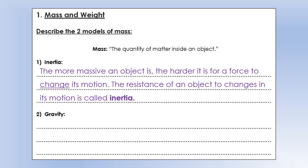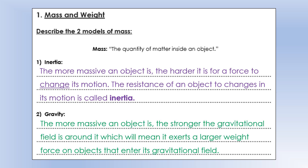The other aspect of physics that mass affects is gravity, because things with mass have gravitational fields around them which interact with each other. The more massive an object is, the stronger the gravitational field around it, which means when another object enters that field it will exert a larger weight force on it.